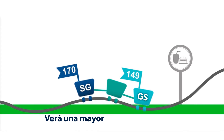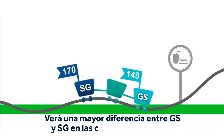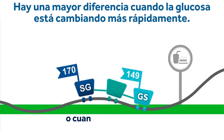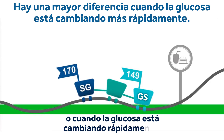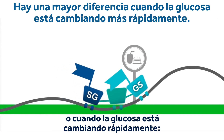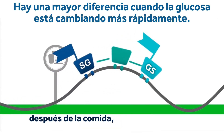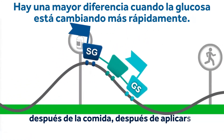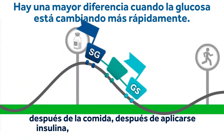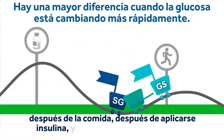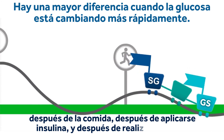You'll see a greater difference in BG and SG on the bigger hills, or when glucose is changing more rapidly — after food, after insulin, and after exercise.